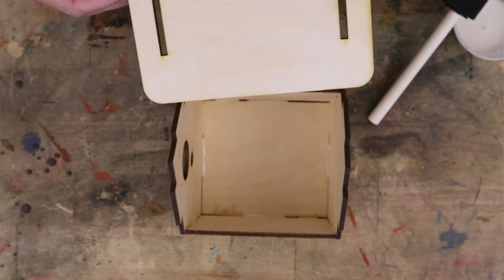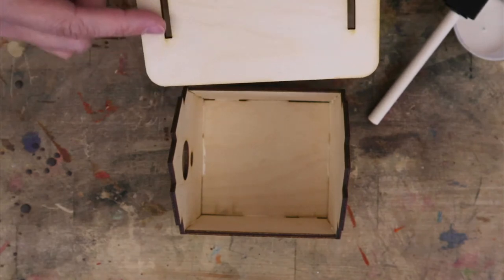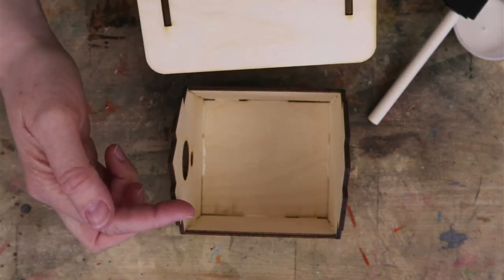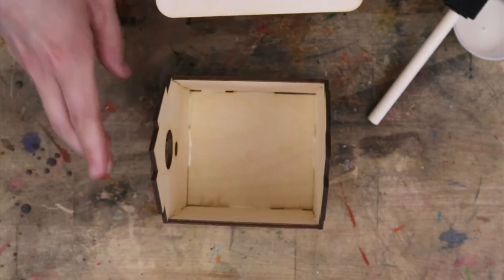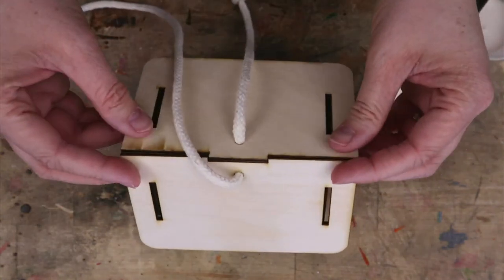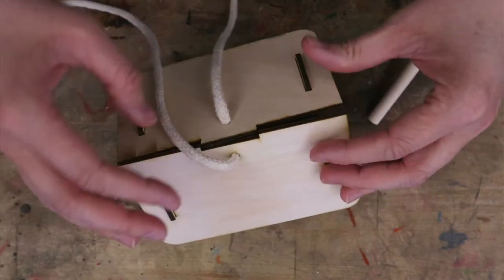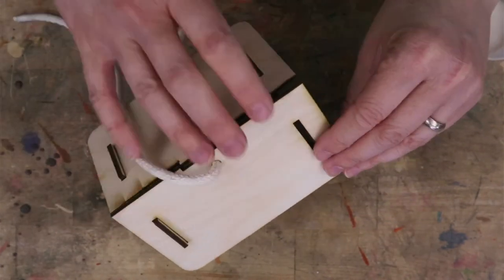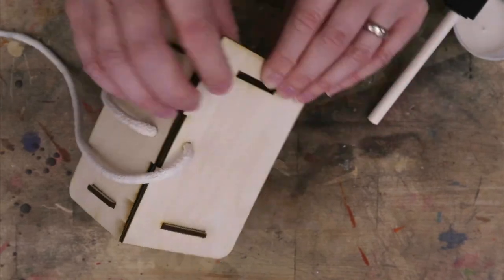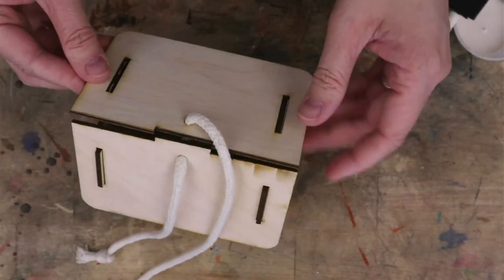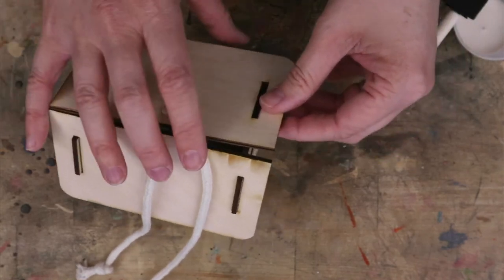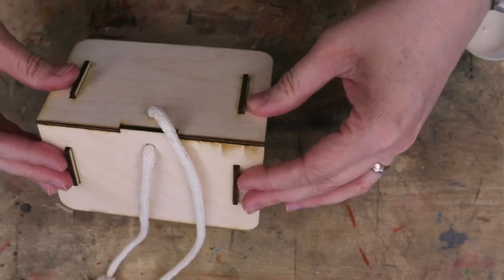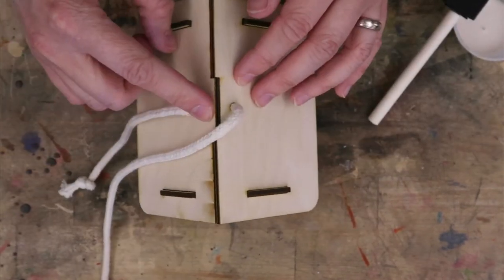So the roof fits on. These little slots here fit on the edges of the front and the back piece. And it should meet nicely in the middle.